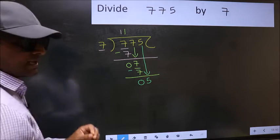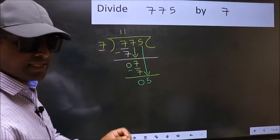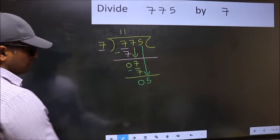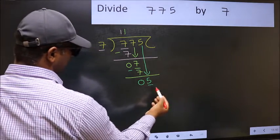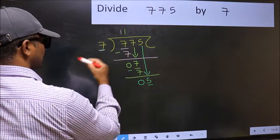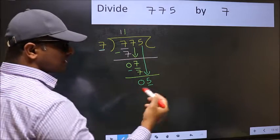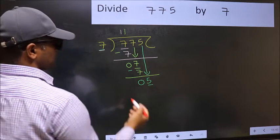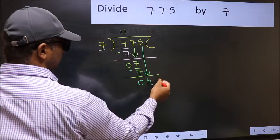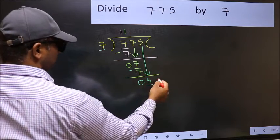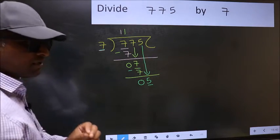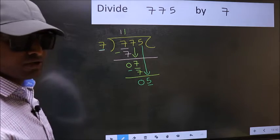the mistake happens. And the mistake is this: here we have 5 and here 7. 5 is smaller than 7. So what many do is they directly put a dot and take 0, which is wrong. Why is it wrong?